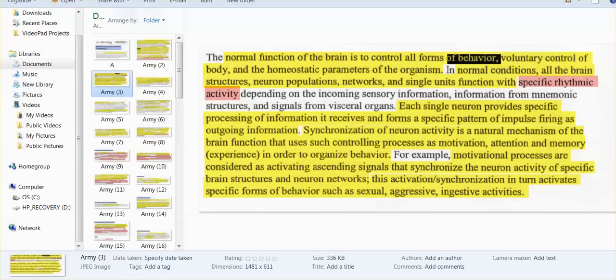In normal conditions, all the brain structures, neuron populations, networks, and single units, function with specific rhythmic activity, specific electric activity, specific frequencies. Each single neuron provides specific processing of information.